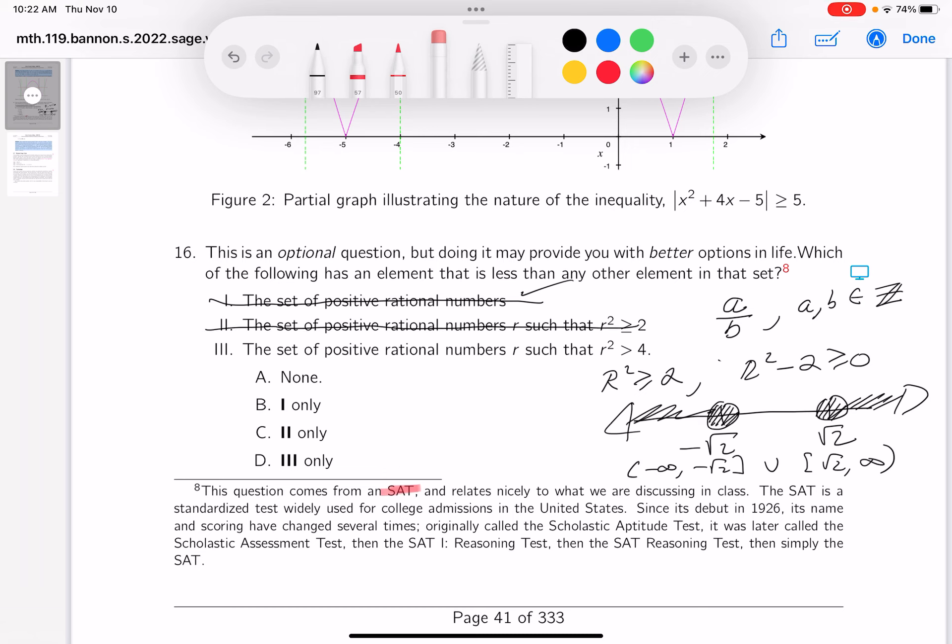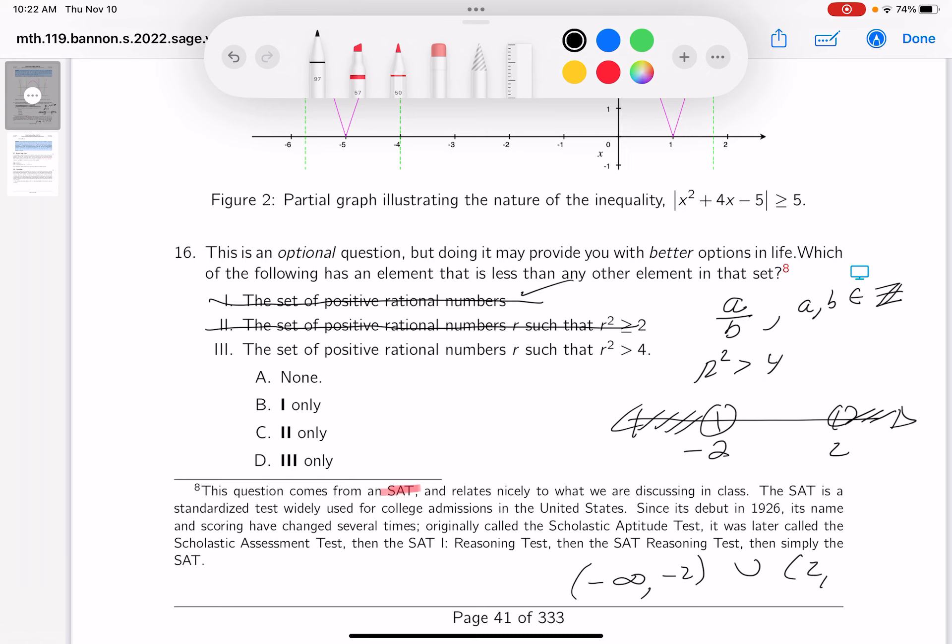All right, let me erase this. And let's go to the third one. The third one, I'm getting a little better at this, is R squared, rational number, greater than four. Well, we kind of just did something like that. So I'm going to say two and minus two, not equal to that, but something like this over here. And what does that set look like? Minus infinity to minus two, union two up to infinity. Again, there's no element in that set that's smaller than all other elements in the set. So what's the correct answer? The correct answer is none.